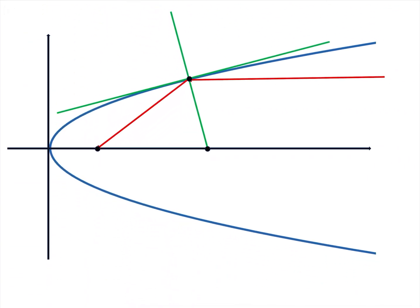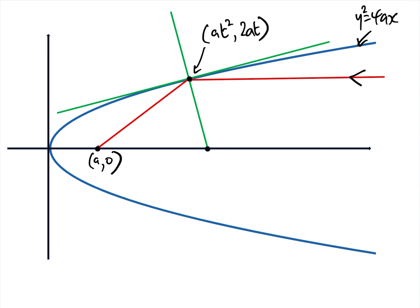So we've got the relevant parts of the mirror. This is the parabola y² = 4ax. This point here is the focus at (a, 0), and we have any random point which by parametric equations is (at², 2at). To prove that this ray coming in from space goes into the focus, we have to prove that the angle of incidence equals the angle of reflection. Let's call this angle alpha, this angle beta, and this angle theta — we need to prove that theta equals beta.